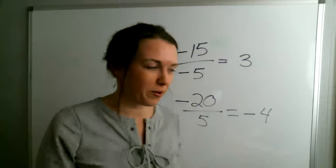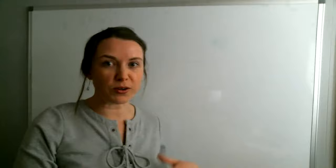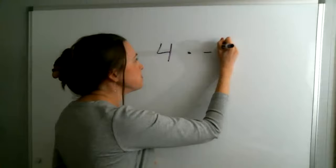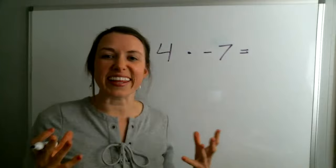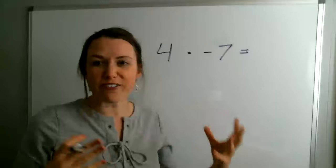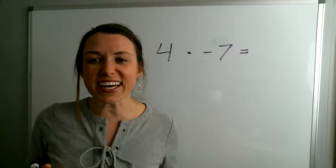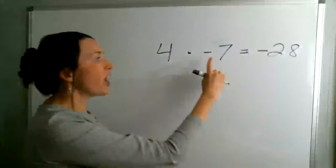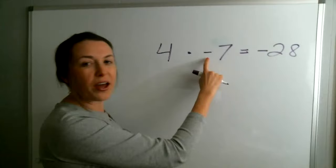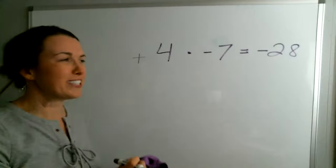Let's do some multiplication now — practicing the negatives and the positives. So let's go four times negative seven. When I think about four times negative seven, I know that two times seven is 14, and then I just double that — 14 plus 14 is 28. The answer is negative 28 because we have a negative and a positive. Mathematicians are lazy and they're not always going to put a positive sign in front of a positive number.